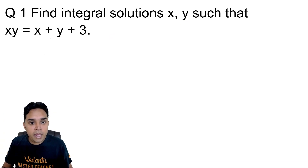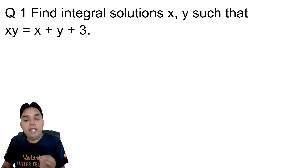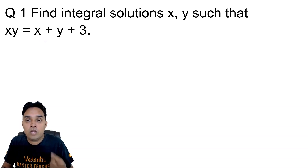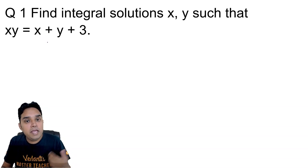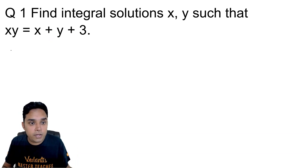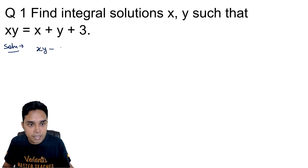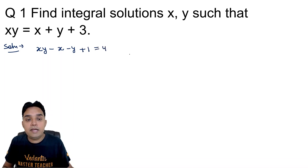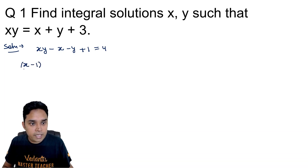It looks like, because x and y are independent variables and you have only one equation, there may be infinite solutions — but that is not the scenario. If we write x and y on the left-hand side like this: xy minus x minus y, and then add 1, this equation can be rewritten. You will then have two factors on the left-hand side: one is x minus 1 and the other is y minus 1, and this is equal to 4.